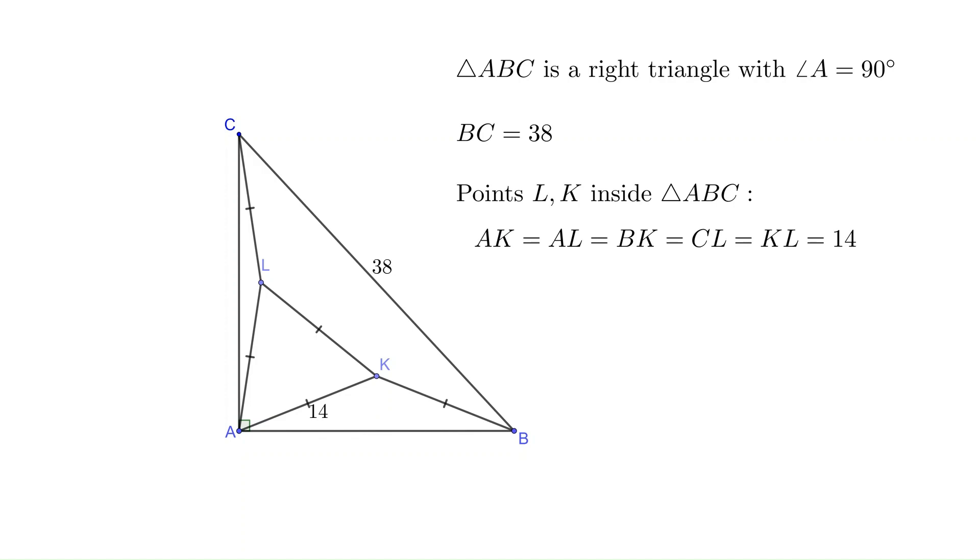There are two points L and K inside the triangle such that AK, AL, BK, CL, and KL all have length 14.